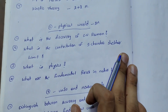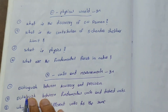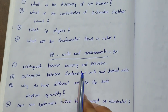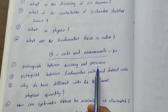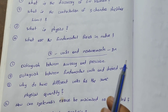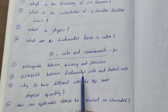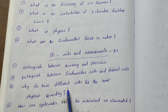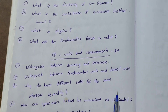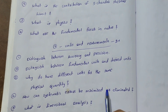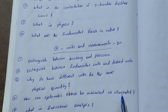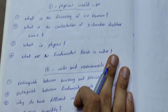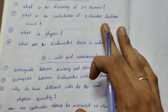Units and measurements: Distinguish between accuracy and precision. Distinguish between fundamental units and derived units. Why do we have different units for the same physical quantity? How can systematic errors be minimized or eliminated? What is dimensional analysis?